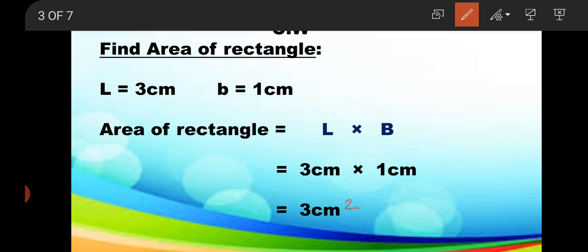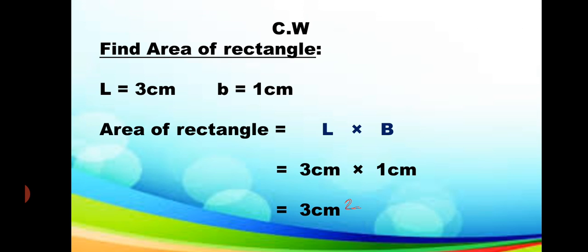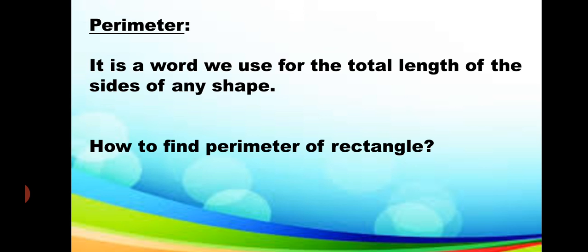Now students, we will learn about perimeter — how to find out the perimeter. First, let me remind you: what is perimeter? Perimeter is the word we use for the total length of the sides of any shape. The shape can be any closed shape.